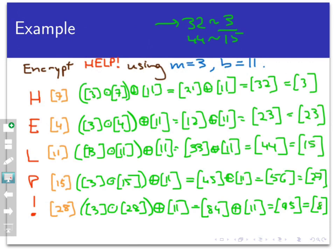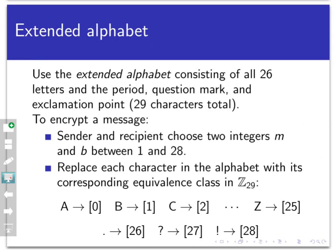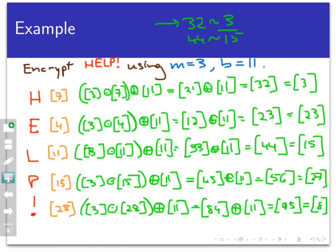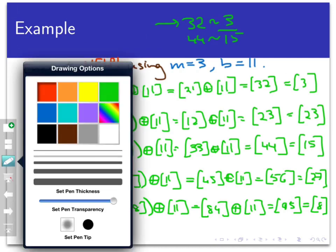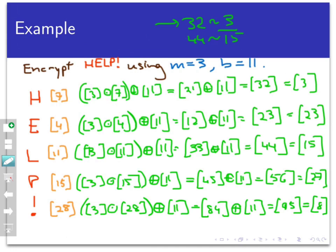Now the final step in the encryption process is to convert all of these back into letters. You can do that by going to our chart or just counting through the alphabet. The class of 3 converts to D, the class of 23 is the letter X, the class of 15 is the letter P, the class of 27 is the question mark, and 8 is the letter I. So here is our encrypted form of the word 'help!' — the cipher text is DXP?I.